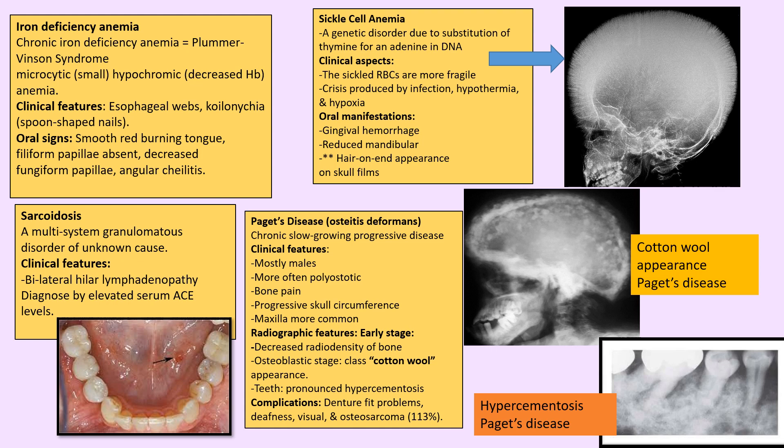Sarcoidosis: the most important findings are elevated serum ACE level and bilateral lymphadenopathy. Sickle cell anemia shows a hair-on-end appearance on X-ray, also seen in thalassemia. It's a genetic condition in which valine replaces glutamate. Sickle RBCs are fragile, they break and form clots causing sickle cell pain crisis triggered by infection, hypothermia, and hypoxia.